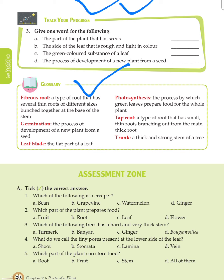Glossary: Fibrous roots — a type of root that has several thin roots of different sizes bunched together at the base of the stem. Germination — the process of development of a new plant from a seed. Leaf blade — the flat part of a leaf. Photosynthesis — the process by which green leaves prepare food for the whole plant. Taproot — a type of root that has small thin roots branching out from the main thick root. Trunk — a thick and strong stem of a tree.